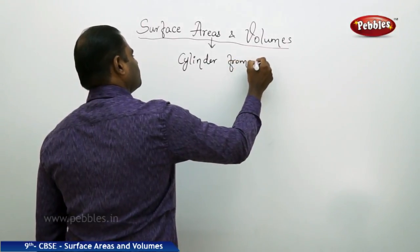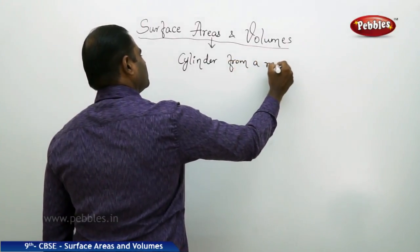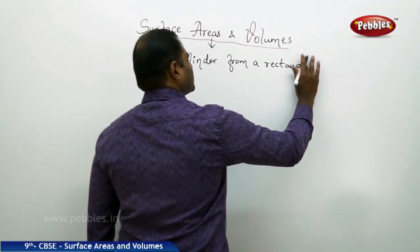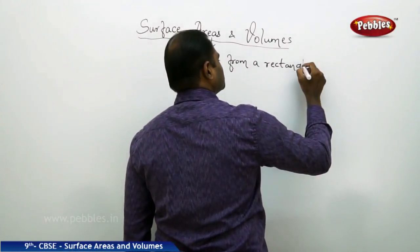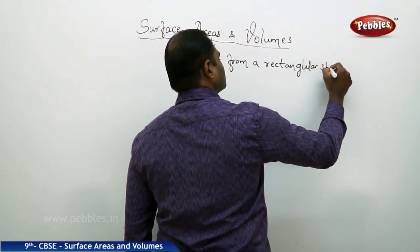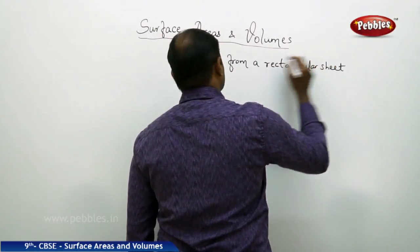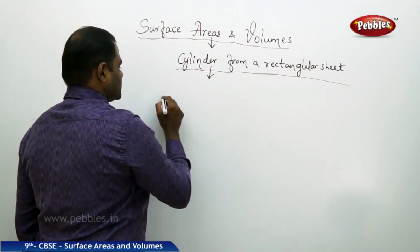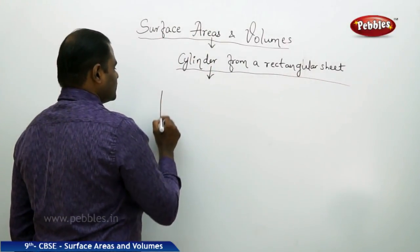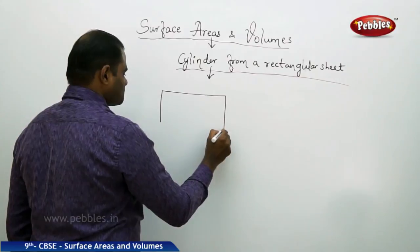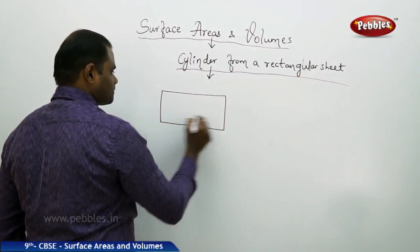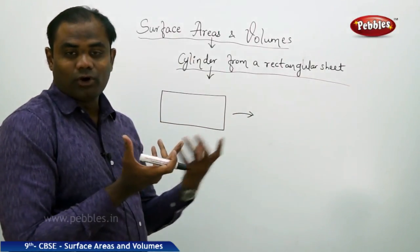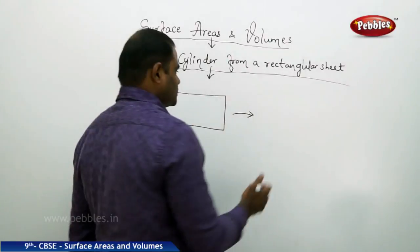Cylinder from a rectangular sheet. As we have seen, a rectangular sheet of paper, when rolled, forms a cylinder.